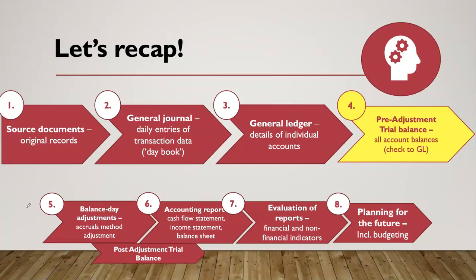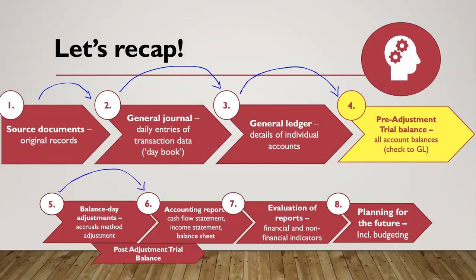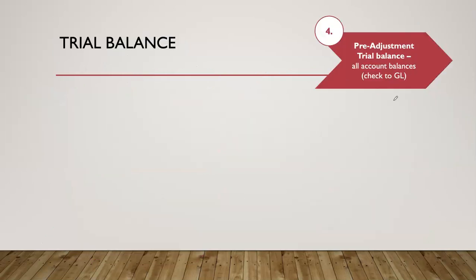Looking at our entire accounting process: we go from source documents to identify a transaction, record it in a general journal, post it to a ledger, and by the end of the month we start to think about reports — our cash flow statement, income statement, and balance sheet. To begin that process, I create a pre-adjustment trial balance, then adjust it with balance day adjustments to create reports. Today we're focusing on the trial balance.